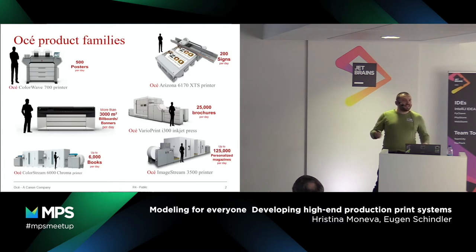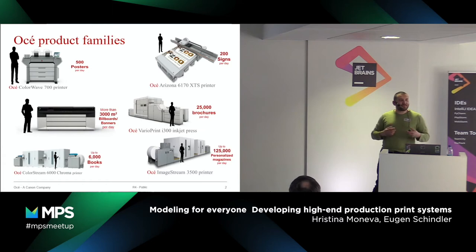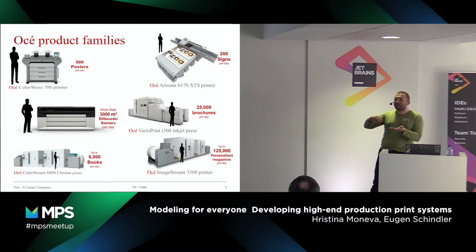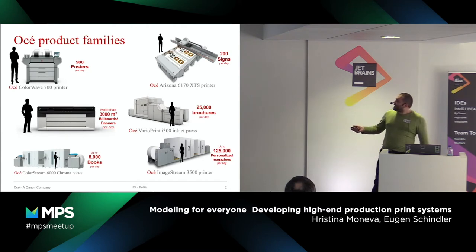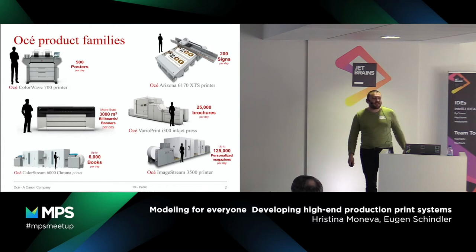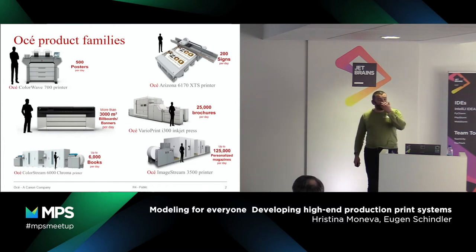We also have the Varioprint i300 — a full-color inkjet printer doing 300 pages per minute, which translates to about 25,000 brochures per day. And there are table printers that can print on almost anything — not only paper. You can put a door on them. Some print carriages are quite large. You can load a robot with 100,000 pens and print the JetBrains logo on them.